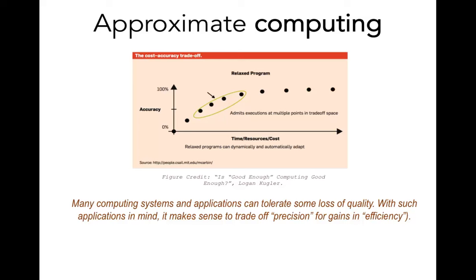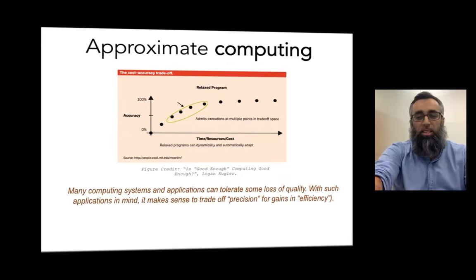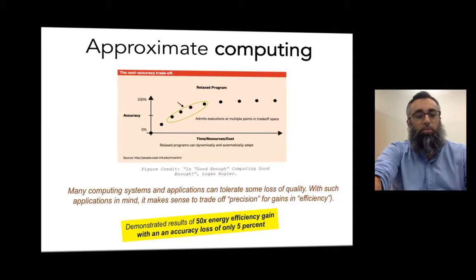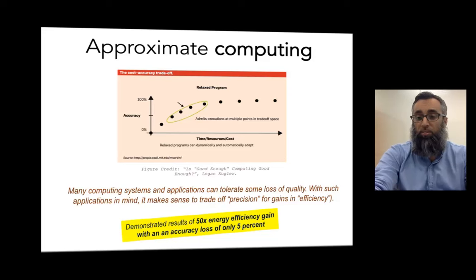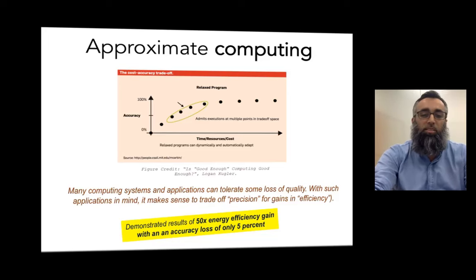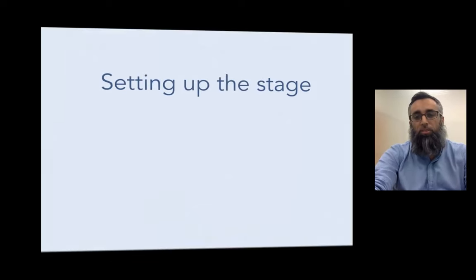In recent times there has been a lot of interest in using approximation as a degree of freedom through which we can optimize computing systems. By compromising on accuracy slightly, we can gain many other benefits — this is the idea of using good enough services. As a concrete example, results in approximate computing have shown a 50-fold energy efficiency gain with an accuracy loss of only five percent for certain applications.